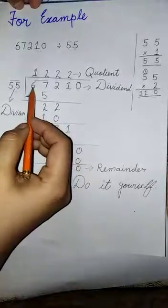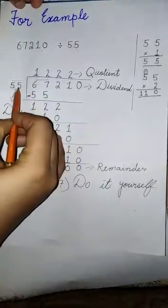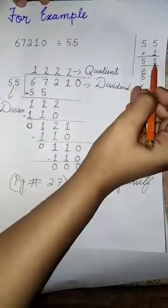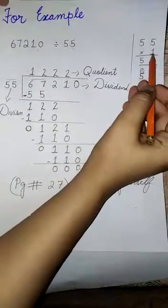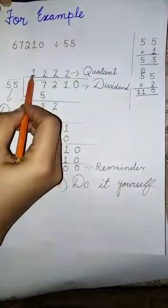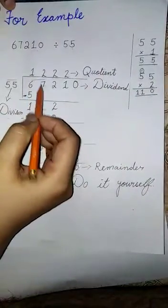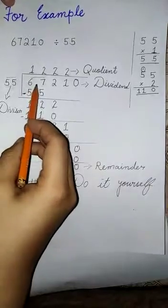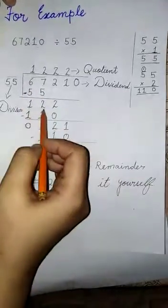First we divide 67 by 55. We know 55 into 1 is equal to 55. So we put 1 at quotient place and 55 below 67. Then we subtract 67 from 55, we get 12.